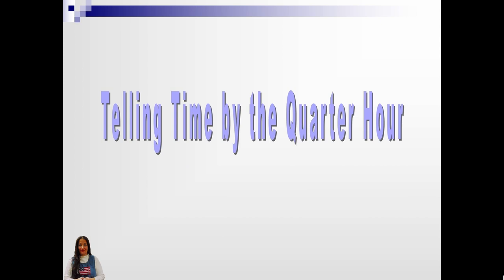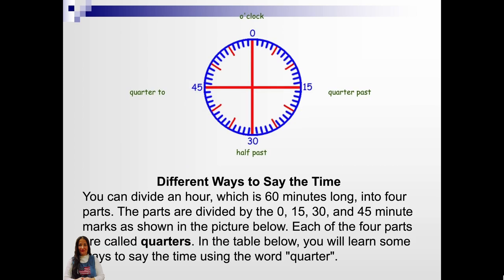Telling time by the quarter hour. Different ways to say the time. You can divide an hour, which is 60 minutes long, into four parts. The parts are divided by 0, 15, 30, and 45 minute marks as shown in the picture below. Each of the four parts are called quarters. In the table below, you will learn some ways to say the time using the word quarter.